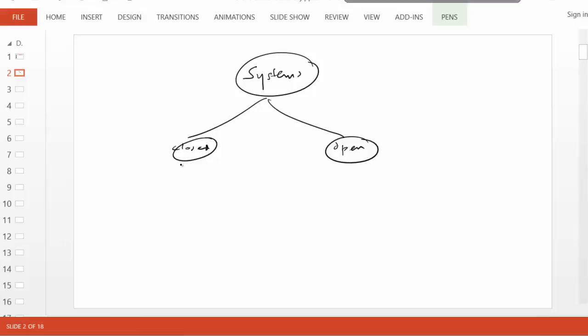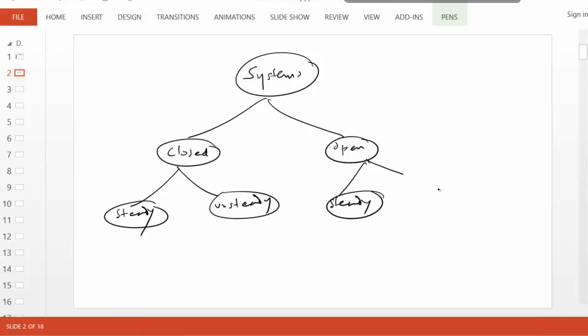And both closed and open systems can be either steady or unsteady. In other words, there is no other possibility. So that is a comprehensive classification. No matter what system you encounter, it has to be either a closed steady system, closed unsteady system, open steady system, or open unsteady system.